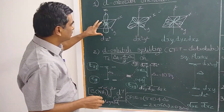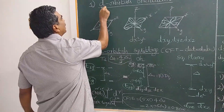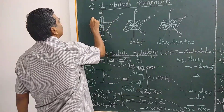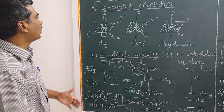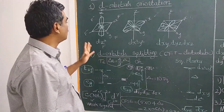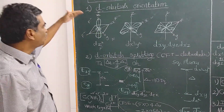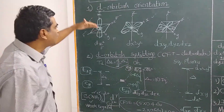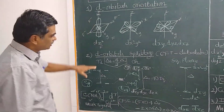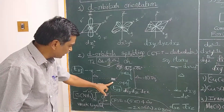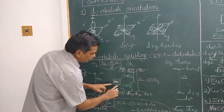For an octahedral complex, six ligands approach the central metal atom. In a free metal ion, the D-orbitals are five-fold degenerate. When the ligands approach, the D-orbitals split. The dz² and dx²−y² orbitals (the eg set) are raised in energy by 0.6Δ₀ with respect to the barycentre, because they directly interact with the approaching ligands.